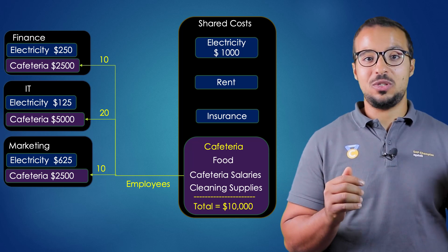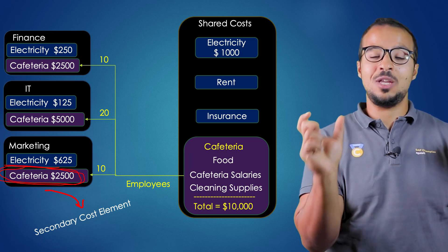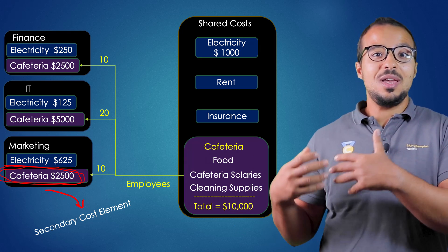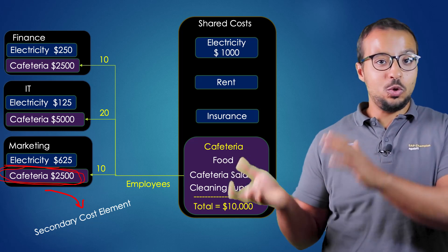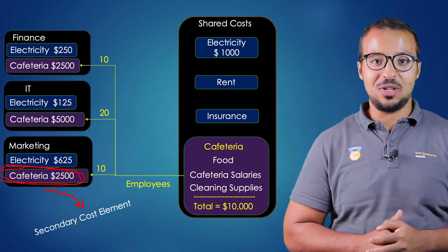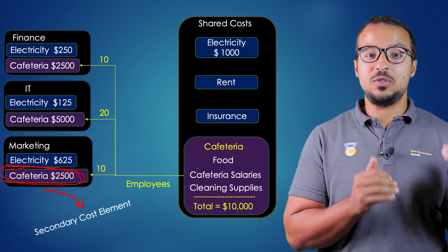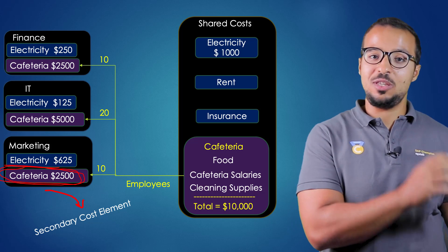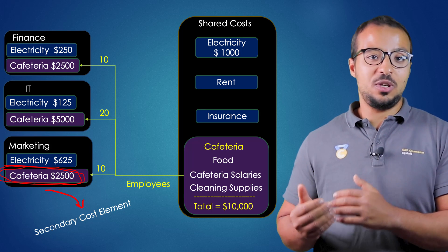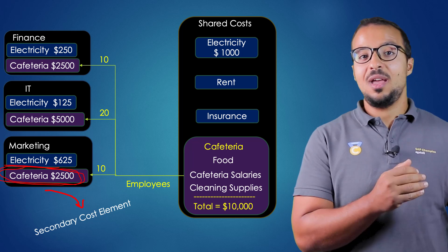With overhead allocation, we credit all the different expenses from the sending cost center and debit only the secondary cost element that appears in the receiving cost center. This makes expense analysis easier and more relevant to managers. In summary: if you want to see the breakdown of expenses in the receiving cost center, use distribution with the same cost element. If you only want a summarized line, use overhead allocation with a secondary cost element.